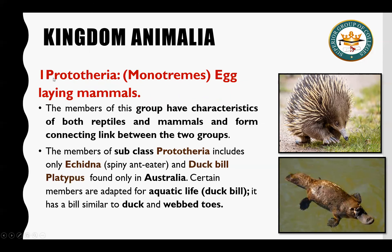ان کی 3 subclasses ہیں۔ پہلی subclass ہے Prototheria — انہیں monotremes بھی کہتے ہیں اور عام زبان میں egg-laying mammals کہتے ہیں، یہ egg lay کرتے ہیں۔ Mammals اور reptiles میں کافی حد تک similar characteristics موجود ہوتے ہیں۔ اس کے اندر دو important examples آتی ہیں: echidna جسے spiny anteater کہتے ہیں، اور duck-billed platypus۔